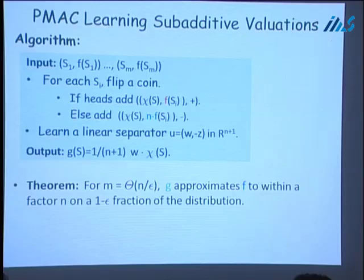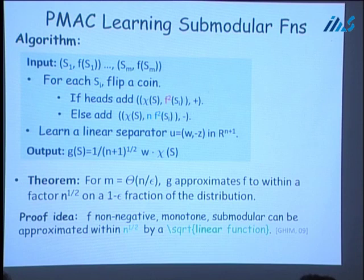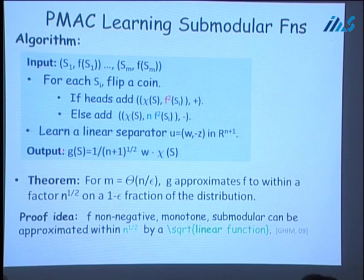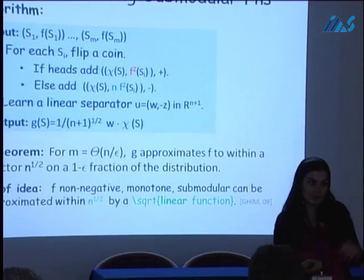In the case where the target function is submodular, we use a stronger structural result due to Goemans et al., which says any non-negative monotone submodular function can be approximated to within a square root of N by a square root of a linear function. By using this stronger structural result, we slightly modify the algorithm — replacing F with F squared and outputting a slightly different function — but using similar ideas, if the number of examples is roughly N over epsilon, we output a hypothesis G that approximates the target within a factor of square root of N on a 1-minus-epsilon fraction of examples from the same distribution.